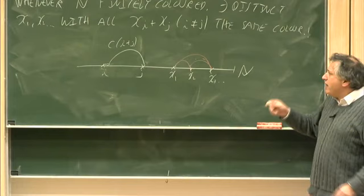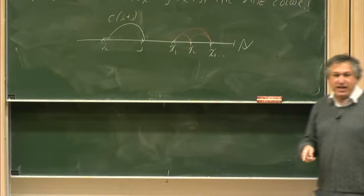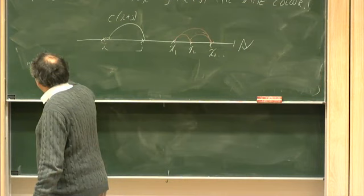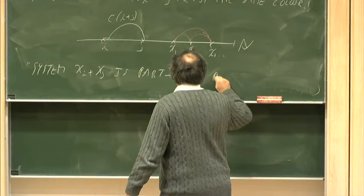You can say that the system of equations x_i plus x_j is partition regular. Partition regular just means that in any finite colouring of the naturals, you recover a copy of your set. So you might say this system is partition regular.